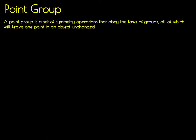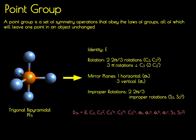A point group is a set of symmetry operations that obey the laws of a group, and all of these symmetry operations will leave one point in an object unchanged. As an example molecule, we use PF5, which is contained in the trigonal bipyramidal geometry. This molecule contains 12 different symmetry elements about which 12 different operations can be performed.